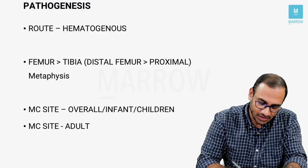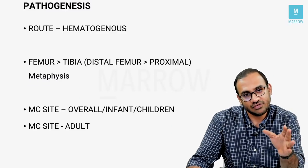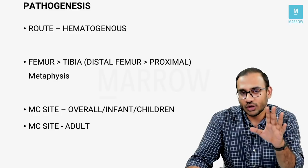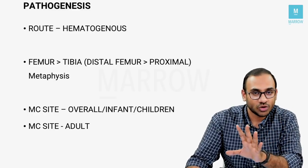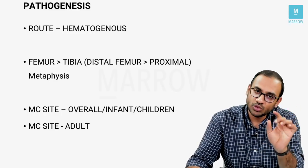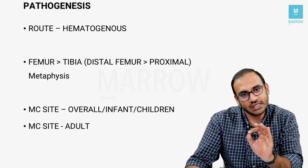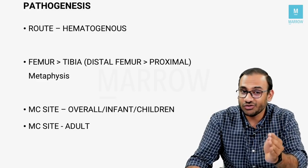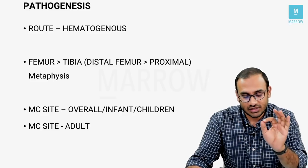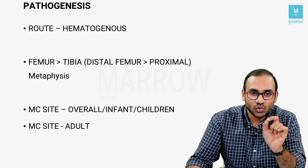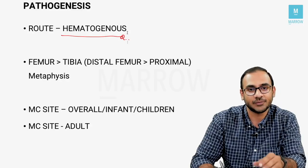Osteomyelitis is the infection of the bone, medullary cavity, or bone marrow. The most common organism causing osteomyelitis is Staphylococcus aureus — that is the organism you must remember — and the route of spread is hematogenous. Please do not forget that.